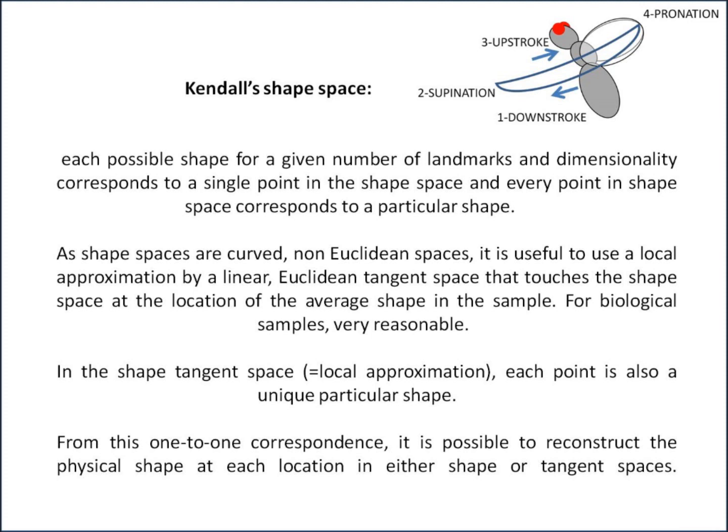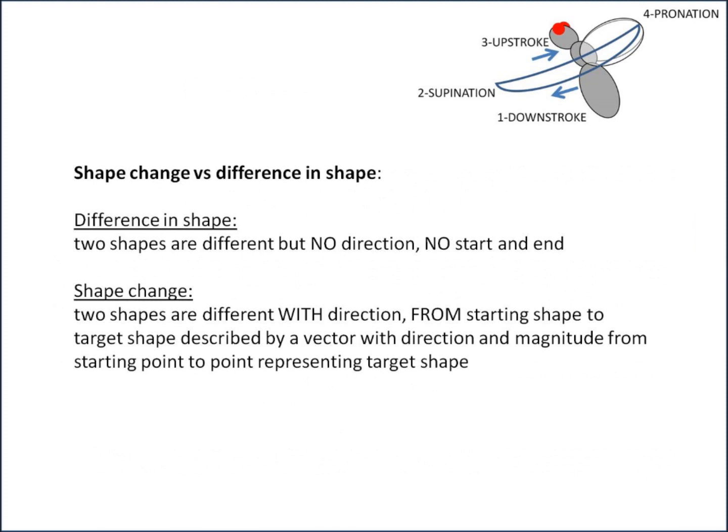Now a little point of vocabulary: shape change is different from a difference in shape. Difference in shape means two shapes are different but there is no direction, no start or end. On the other hand, shape change means two shapes are different but there is a direction. You go from a starting shape to a target shape and it's described by a vector with a direction and a magnitude from the starting point to the point representing the target shape in either shape or tangent spaces.